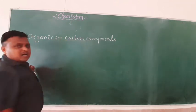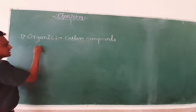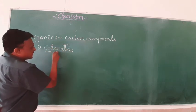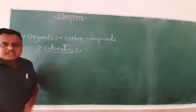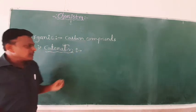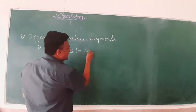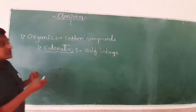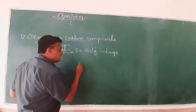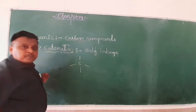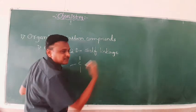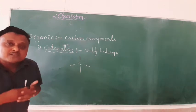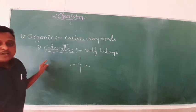Based on carbon compounds, we start with the concept of catenation. What is catenation? Catenation is nothing but the self-linking property of carbon. Why does carbon have self-linking? Because carbon has tetravalency. Valency is nothing but the combining capacity of the elements.